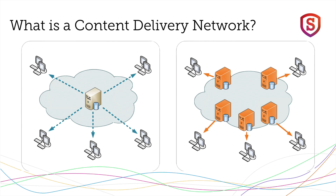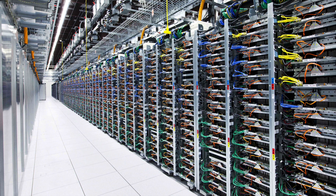A content delivery or distribution network is a distributed network of servers deployed in multiple data centers. The goal of a CDN is to serve content to end users with high availability and high performance. CDNs serve a large fraction of internet content today, including web objects like text, graphics, and scripts; downloadable objects like media files, software, and documents; applications like e-commerce and portals; and live streaming media, on-demand streaming media, and social networks.